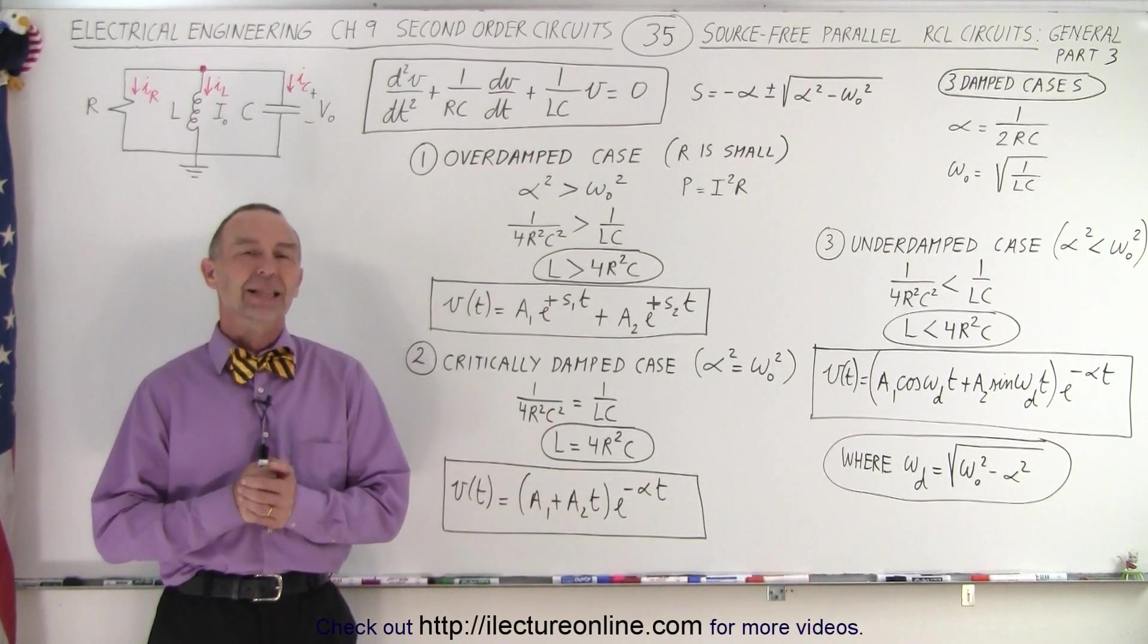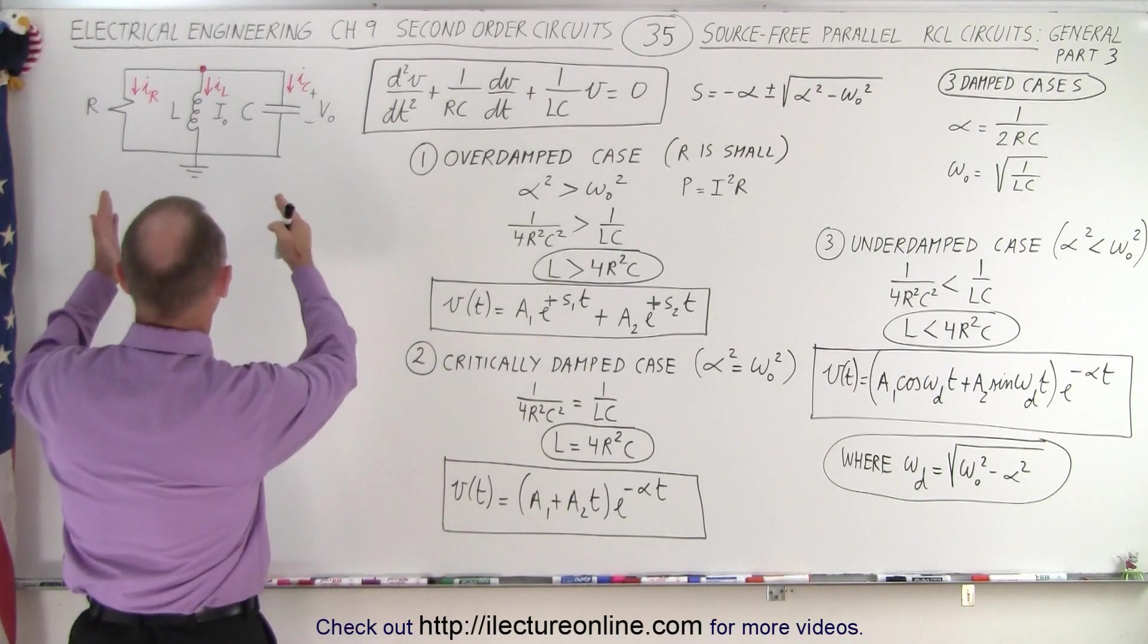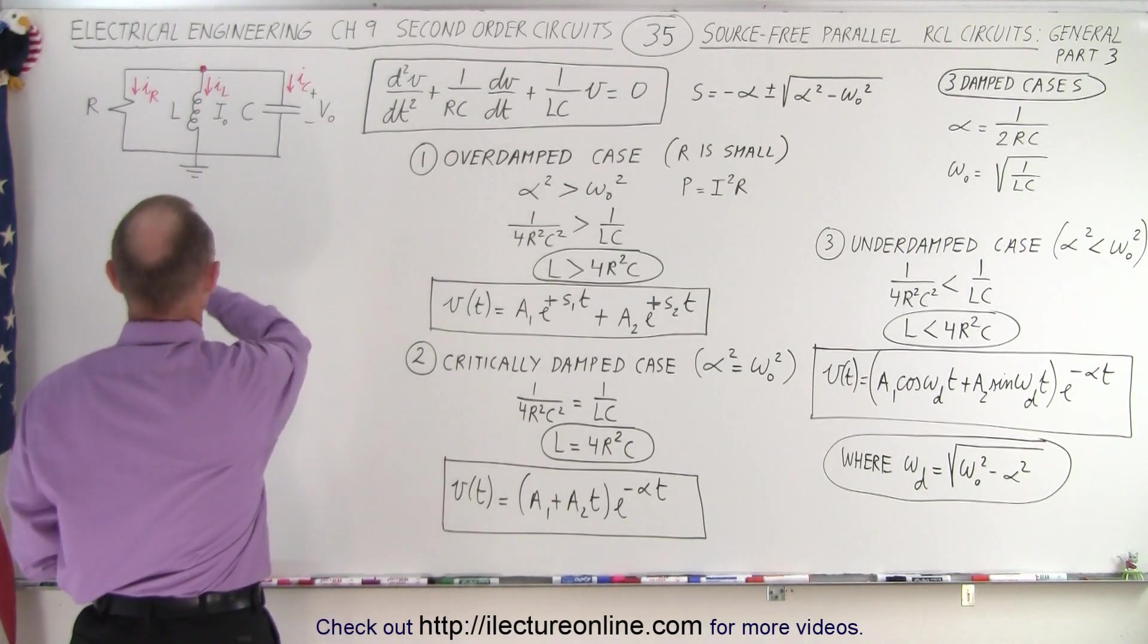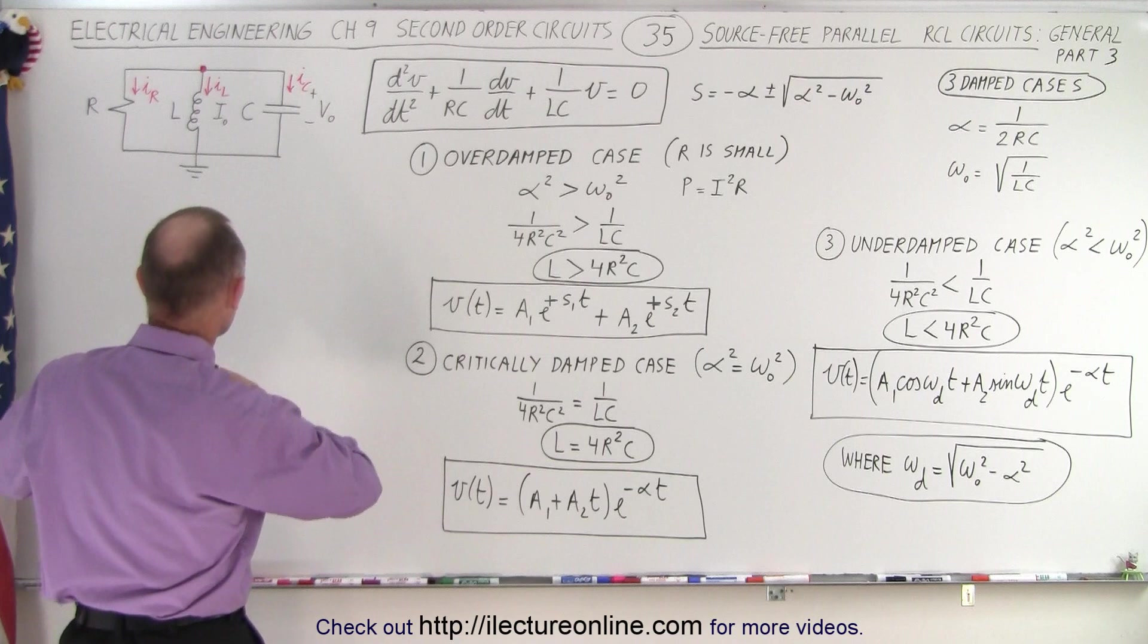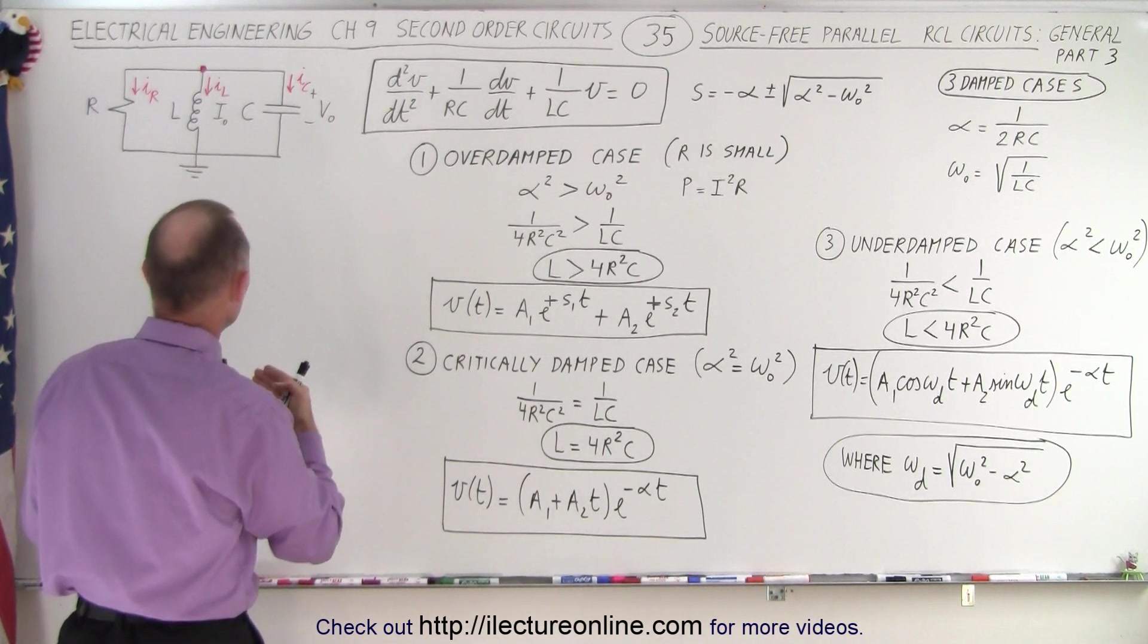Welcome to Electronline. In the last couple of videos, we saw that we could take a general circuit like this, a parallel circuit with a resistor, an inductor, and a capacitor. There's no source. This is a source-free circuit with all three components.